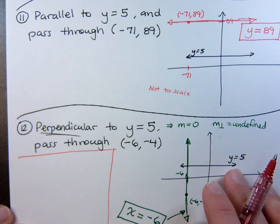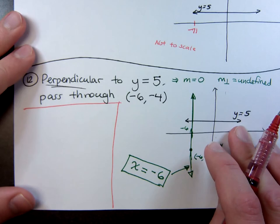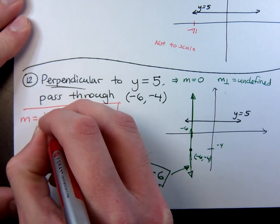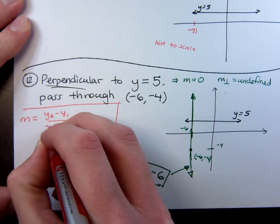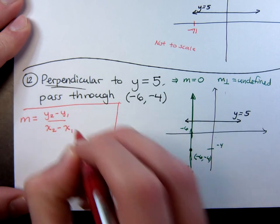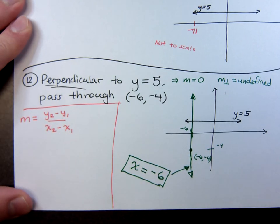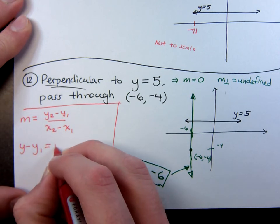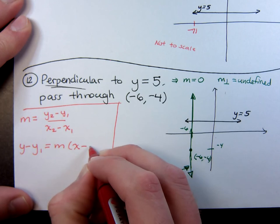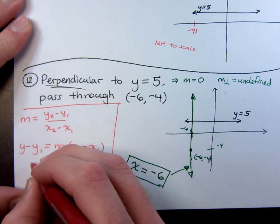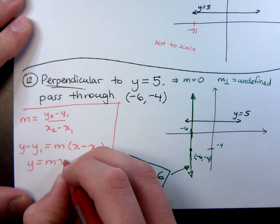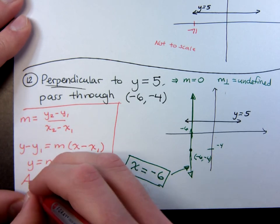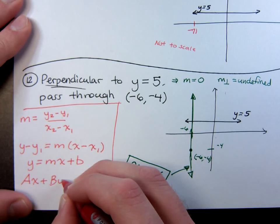A couple of formulas. You need to know the formulas for your slope, which is y2 minus y1 over x2 minus x1. You need to know your point slope formula: y minus y1 equals m times x minus x1. And, of course, you need to have good working knowledge with your slope intercept form and, of course, your standard form.